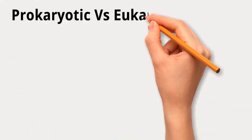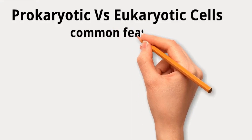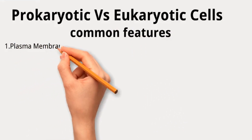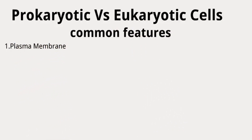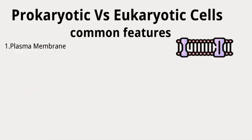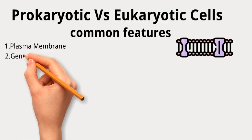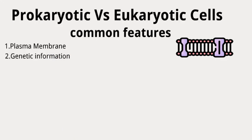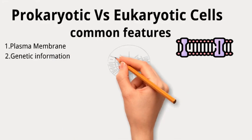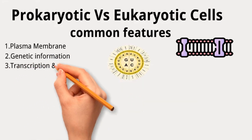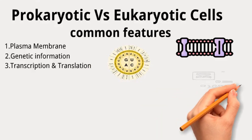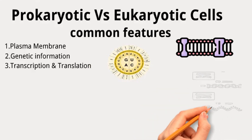Prokaryotic and eukaryotic cells exhibit numerous common features. Both types are enclosed by a plasma membrane, serving as a protective boundary in controlling substance exchange. Both store genetic information in DNA, using the same genetic code. They employ similar mechanisms for reading and utilizing genetic data, utilizing comparable ribosomes for protein synthesis. Common metabolic pathways such as glycolysis and the TCA cycle are present in both cell types.